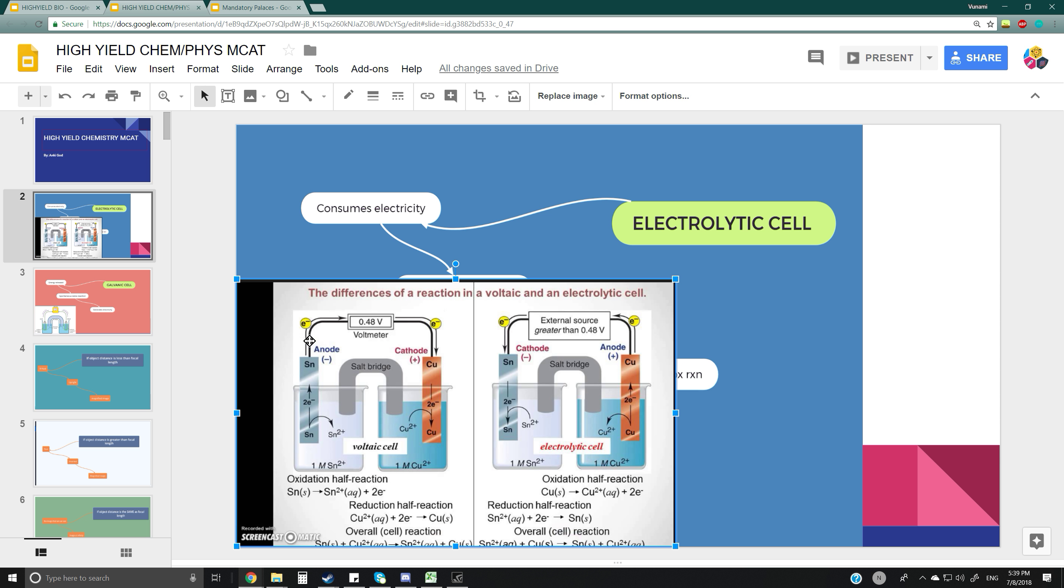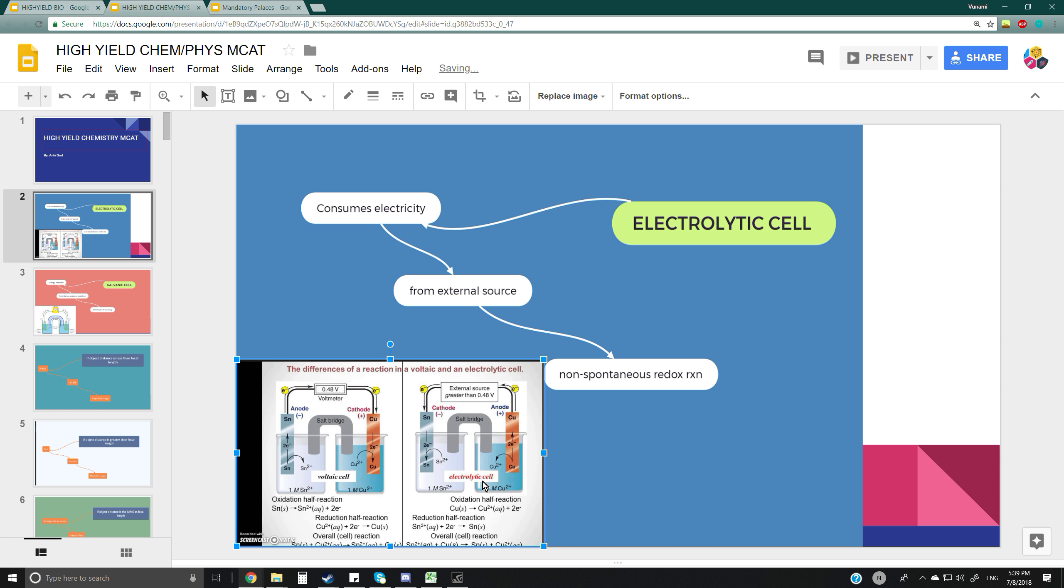There's a salt bridge and a voltmeter. The voltmeter distributes the electrons, while the salt bridge distributes ions to allow for equilibrium. That's the difference between electrolytic cells and galvanic cells.